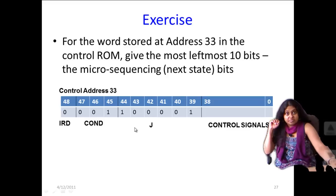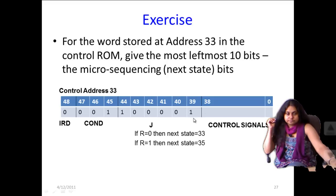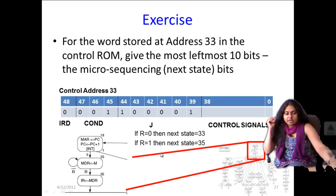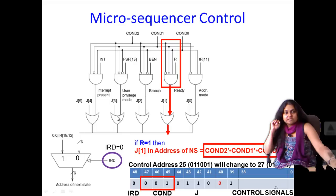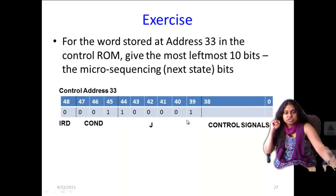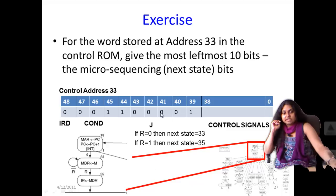Now we come to the j bits. The j bits will encode 33, which is 100001, because that's the state we are in. Now if you look at what happens when r is equal to 1, this condition will be met. When r equals 1, j1 will change, and when j1 changes it becomes 1000011, which corresponds to state 35. So that is the answer to this question.